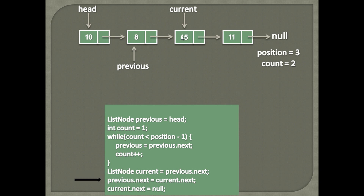Previous node's next points to current node. Thus, instead of pointing to current, it should point to current's next. So in this step we assign current's next value to previous node's next.